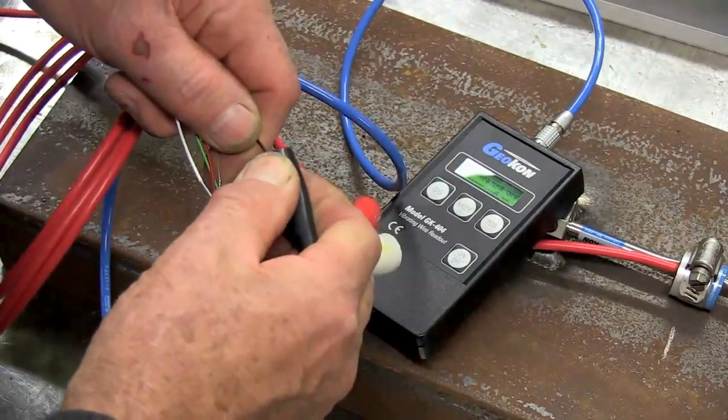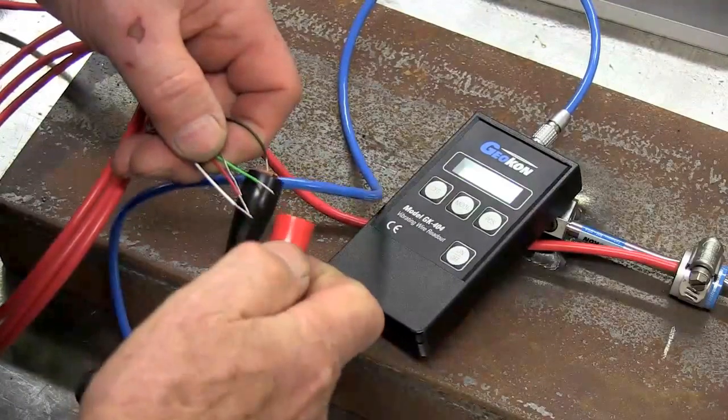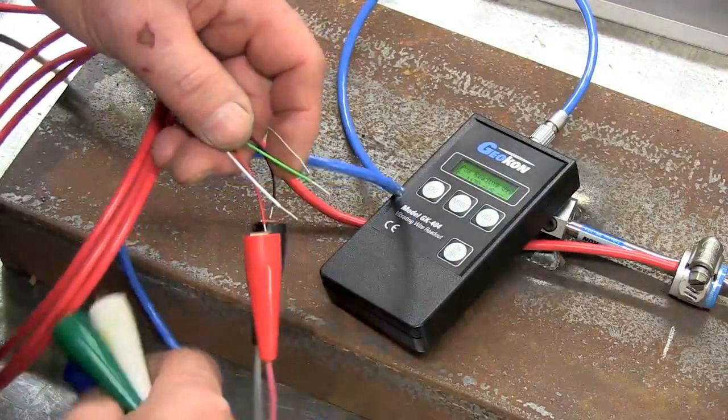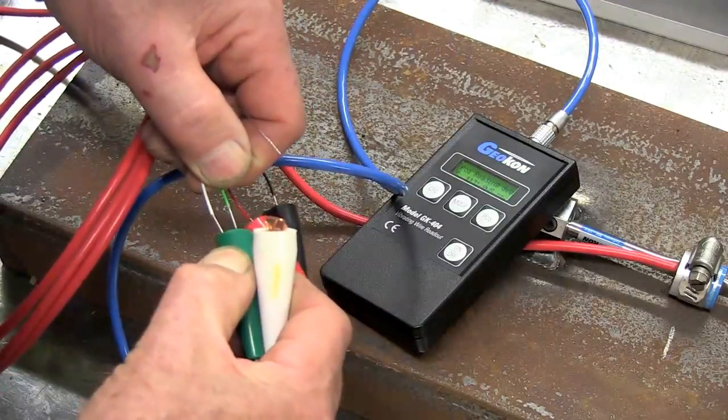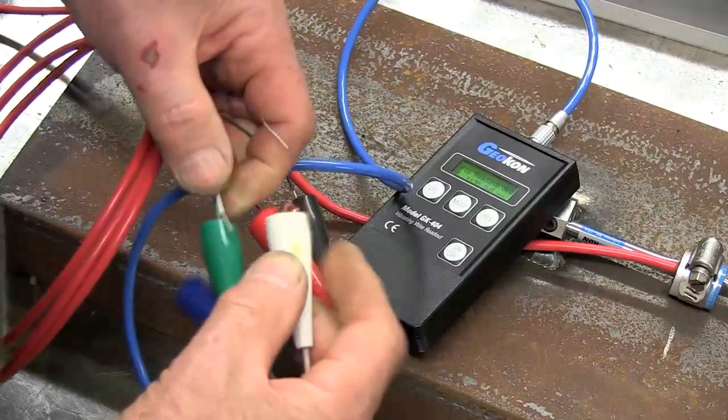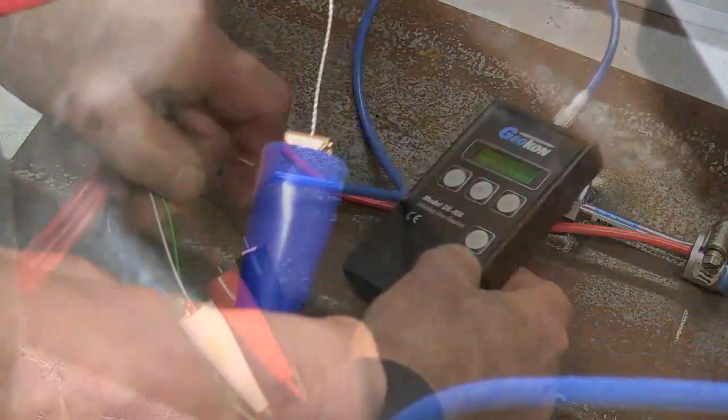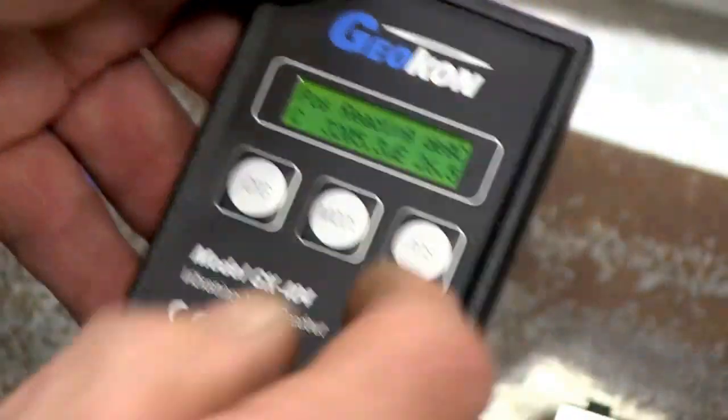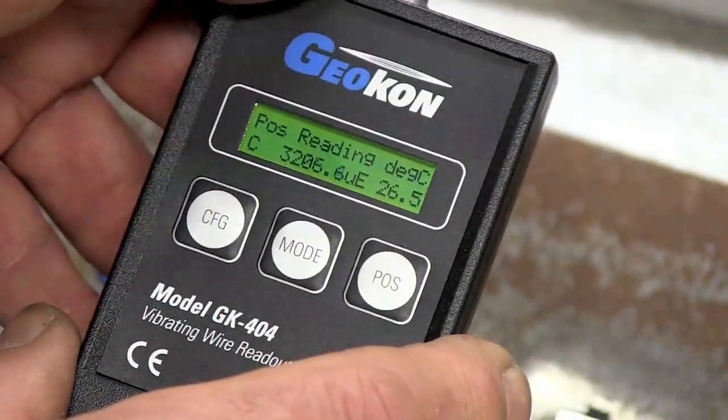The black and the red are connected to the strain gauge itself. The green and the white are for a temperature gauge. It's included in that excitation coil for measuring temperature. We always take simultaneous readings of strain and temperatures. The blue wire is for elimination of electrical noise.